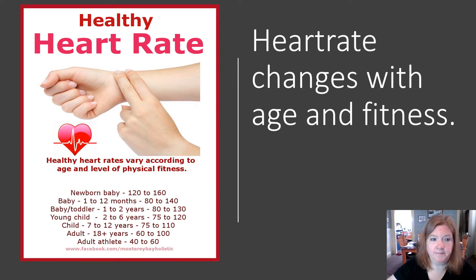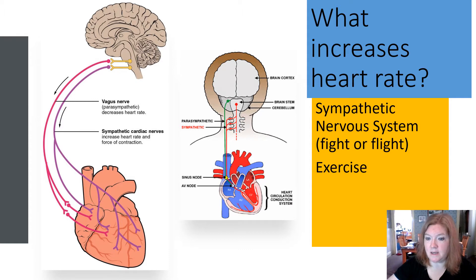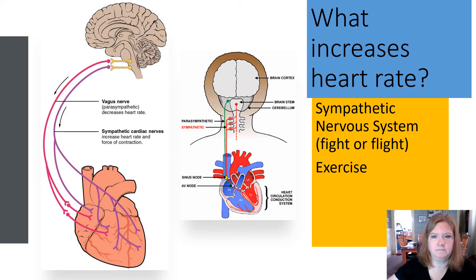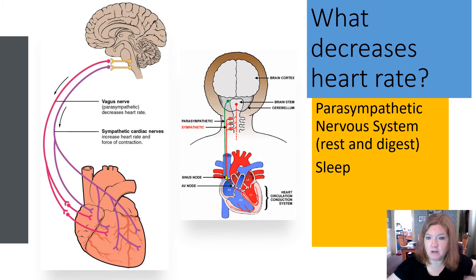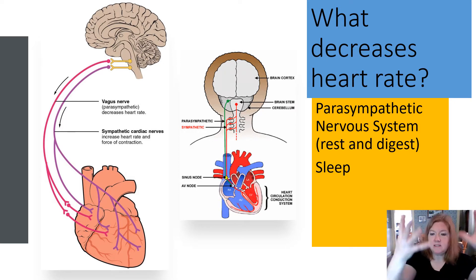What increases heart rate? Your sympathetic nervous system — fight or flight — and also exercise. The sympathetic nervous system increases your heart rate, like when you're nervous or scared. What decreases your heart rate? The opposite: the parasympathetic nervous system — rest and digest — and also sleep. Parasympathetic is like a calm-down response.